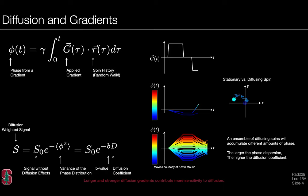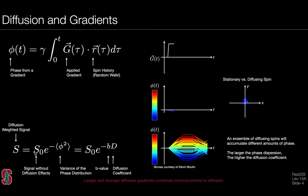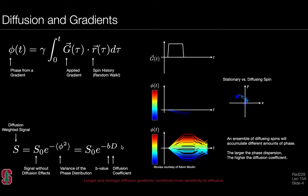We also saw that the signal depends on some base signal obtained without diffusion encoding effects, and has a dependence on the B-value, which depends on the gradient waveforms applied as well as the underlying tissue's diffusion coefficient. In this lecture, we'll spend more time examining the B-value itself and then developing concepts about imaging sequences.